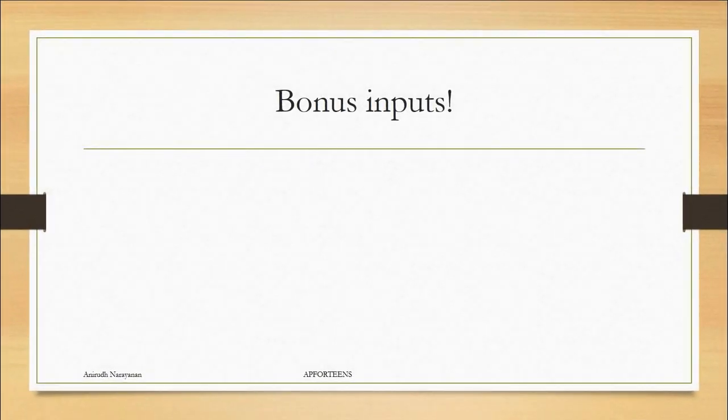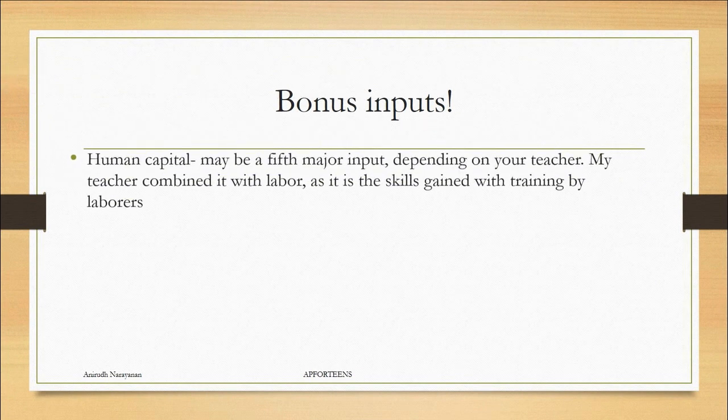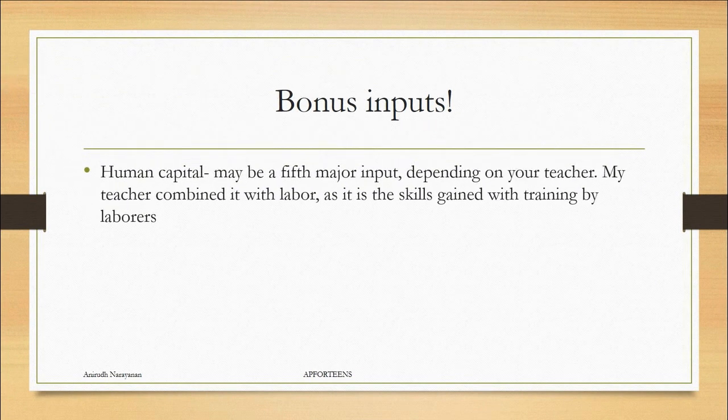Now some other inputs. You'll also see something called human capital depending on your teacher. They may say human capital is a fifth major input. My teacher and the books that I've read haven't counted that as a separate category. They combine that with labor because we interpret it as the skills gained with training by the laborers. So it would lap into that. But you may see that as a fifth separate category that's perfectly acceptable.